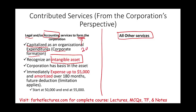For example, if an individual contributed $20,000 worth of accounting and legal services to form the corporation, we debit $20,000 as an intangible asset. The law allows us to expense up to $5,000 of that $20,000 up front, and the remainder is deducted over 180 months in the form of amortization. The $5,000 immediate deduction is allowed as long as total organizational expenditures do not exceed $55,000. Once expenditures exceed $55,000, you must amortize the entire amount.